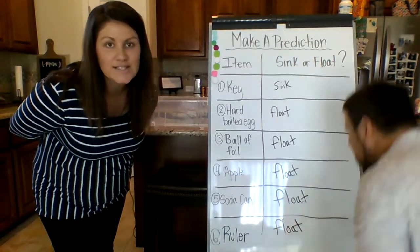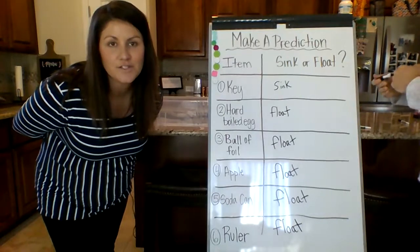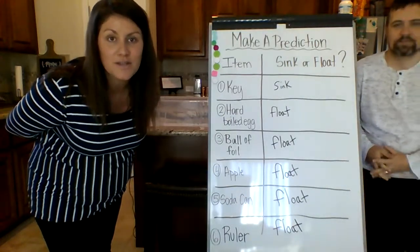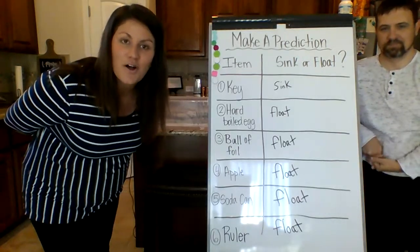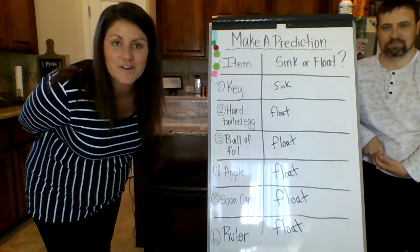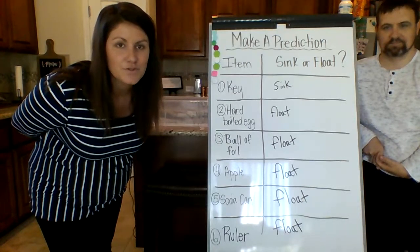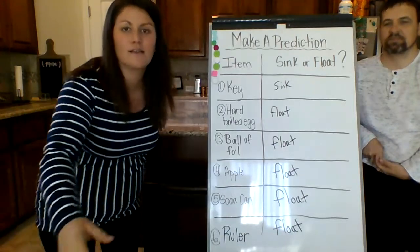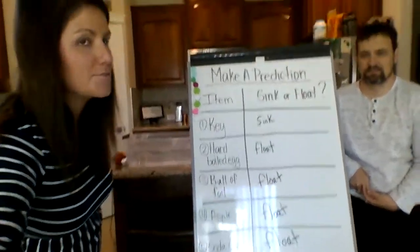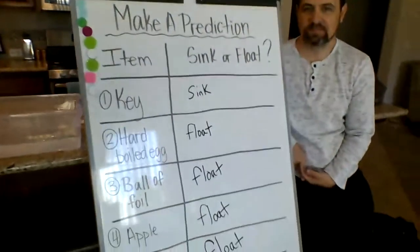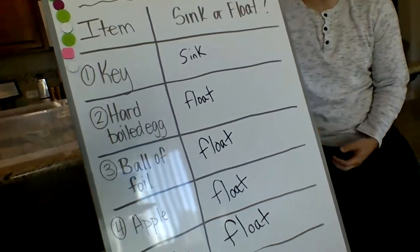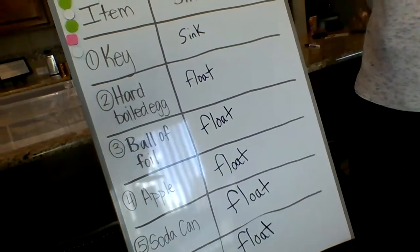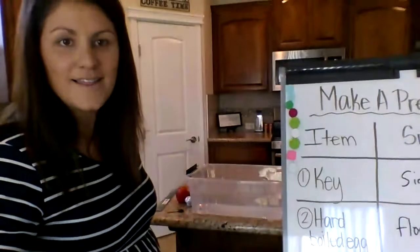If you are doing this on your own, go ahead and finish your predictions. If you're doing this as a family and you have other members at home also making their predictions, make sure you're all locked in before we get started, because we're about to try all these items in our water here. One last look at our items — you predicted most items will float except for the key. Let's see what happens.